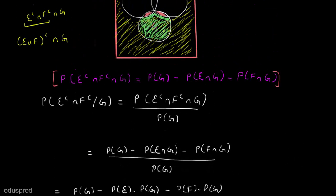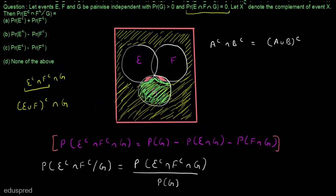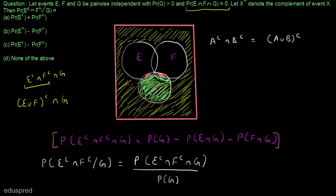So the answer is option C. Note there was a small mistake — in option C there is no complement on F, so the answer is P(Eᶜ) - P(F), which corresponds to option C.